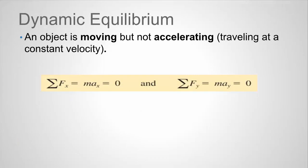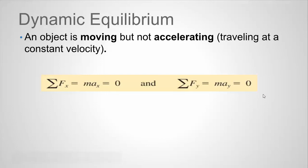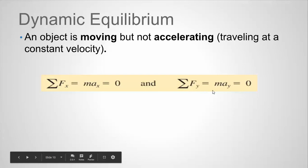We could also have an object that's moving but not accelerating. This is called dynamic equilibrium. These objects travel at a constant velocity. The equations we use for the forces are exactly the same: the sum of forces in the x direction equals mass times acceleration in x, equal to zero; and the sum of forces in the y direction equals mass times acceleration in y, equal to zero.